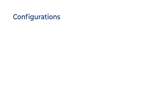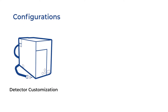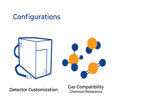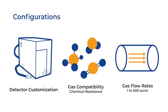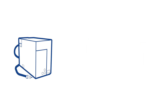The BTA is tailorable to fit your desired experiments through customization of detector as well as gas compatibility, including the use of toxic gases through an enhanced corrosion-resistant model. Additionally, the flow rate of the unit is flexible, ranging from as low as one standard cubic centimeter per minute to several hundreds of standard cubic centimeters per minute, depending on the needs of your application.